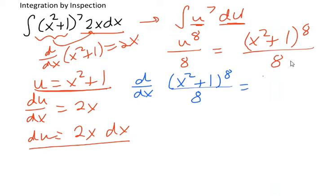That will equal 8 times x squared plus 1. Remember, the 8 comes from the power rule because you bring it down. And now using the power rule, you also have to minus the exponent by 1. So it becomes 7 divided by 8.